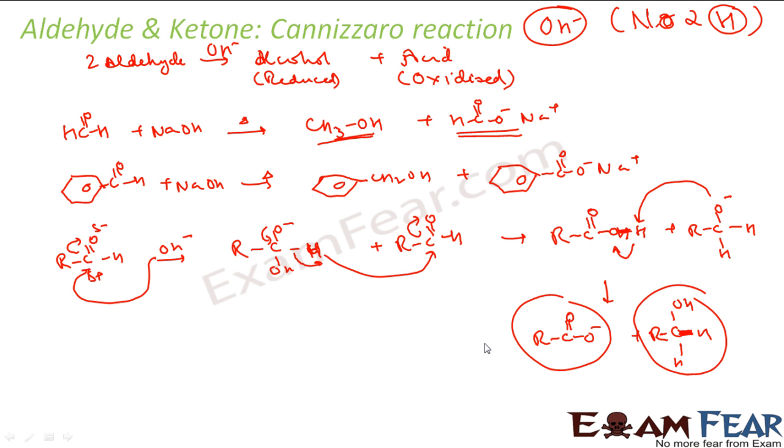This is self-oxidation and reduction. One will get oxidized, the other will get reduced, and this happens only if you don't have alpha hydrogen. So in that case, OH minus will attack this carbon, and then this will help to kick out this hydrogen, and then this hydrogen will come out as H minus and will try to attack this carbon. So this becomes alcohol and this becomes carboxylic acid.